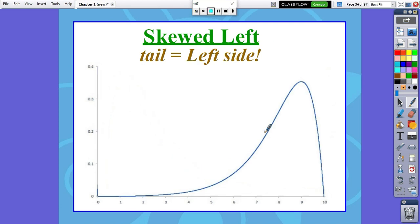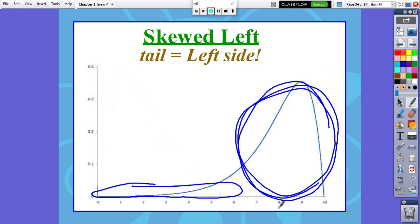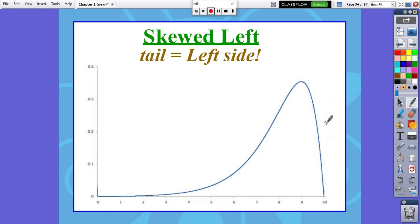Flip it over and we've got a skewed left distribution. Now we have very few values taking smaller values and a lot of data values over on the right side taking more of these larger measurement values. Skewed left, skewed right, always go with the tail to describe the direction of the skewness.